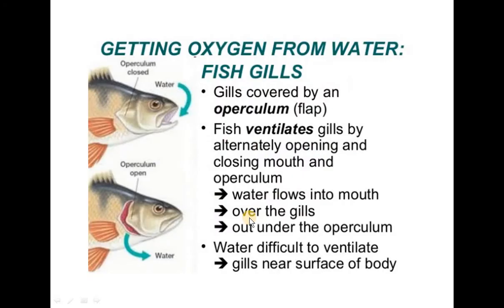First of all, we will see that most gills are present inside the body as internal gills. But there are some organisms that have external gills, present outside the body. If we take examples of fish and amphibians, some are present with external gills outside the body. On the fish's body surface there is a flap called the operculum, which covers the gills.